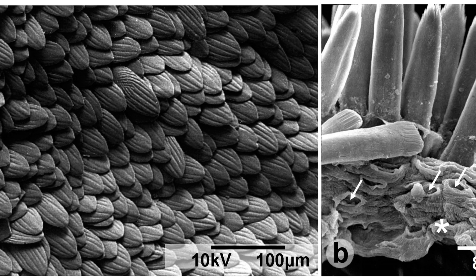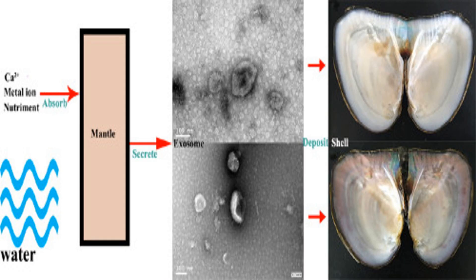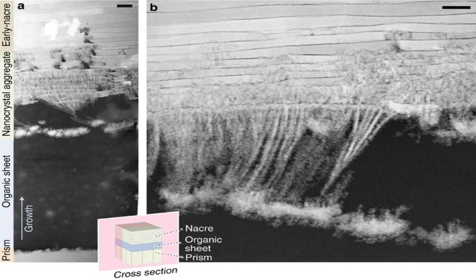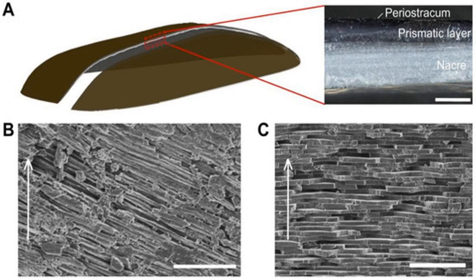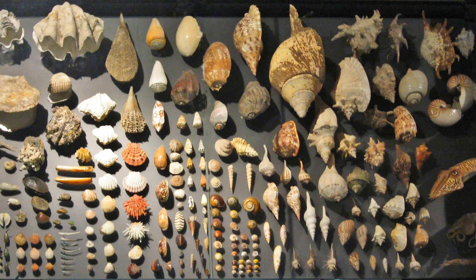Once the mollusk's defense mechanism is activated, the deposition of nacre begins in a continuous process. Layer by layer, the mollusk secretes nacre over the irritant, gradually encasing it within a protective coating. The deposition of nacre is a slow and meticulous process that requires precise control over the secretion and arrangement of the crystalline structures.